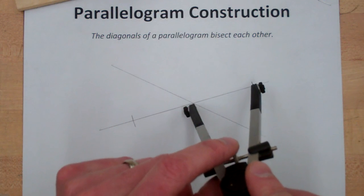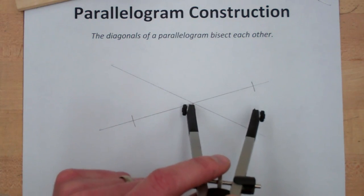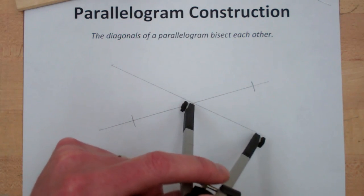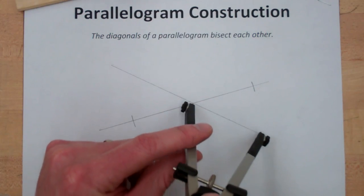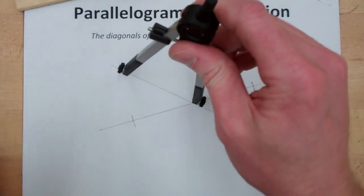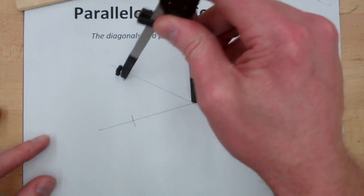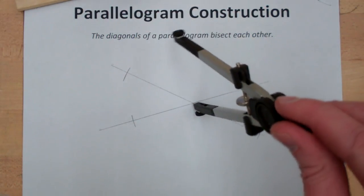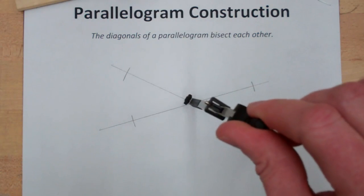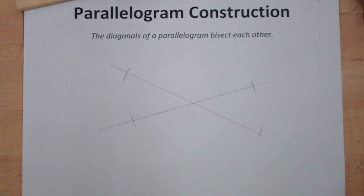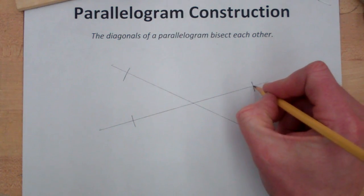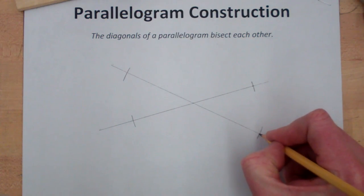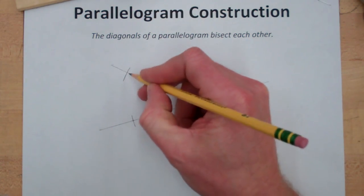Then I'm going to change my compass. I'll make this one longer so that will be the longer diagonal, and I'll make another mark on each side of the center point. Now what I've just done is created the vertices of the parallelogram.